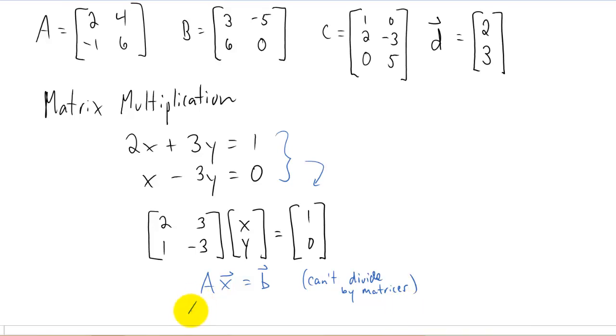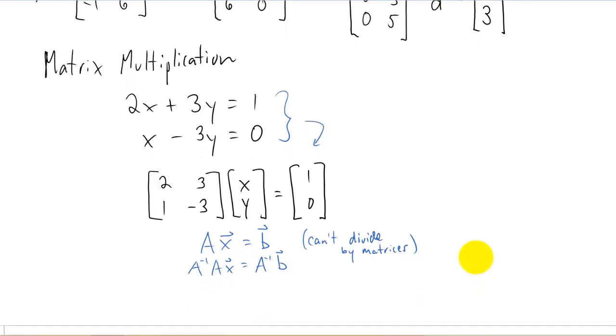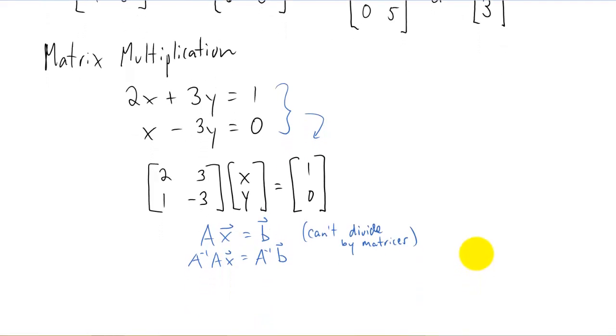You know from regular algebra that division is the same as multiplication by an inverse. So what we can do is we can actually take this equation and multiply it on both sides by an inverse of A. And when you take A inverse times A they cancel each other out in a sense. We're going to talk a little bit more about that in class. You actually get something called an identity matrix.